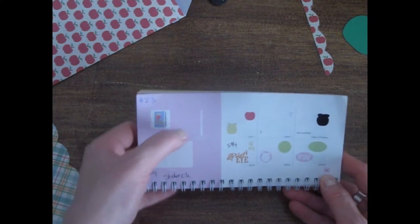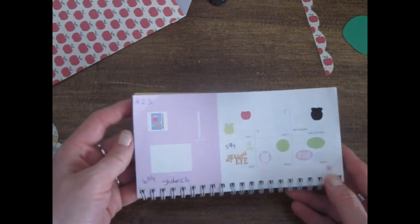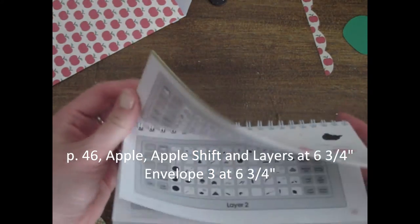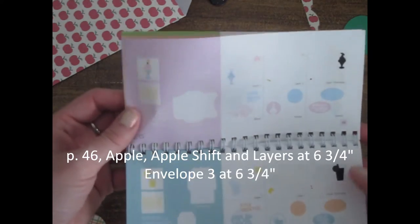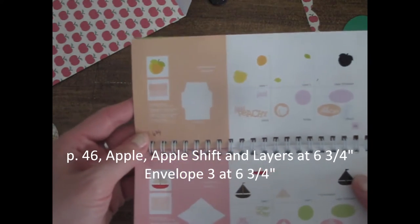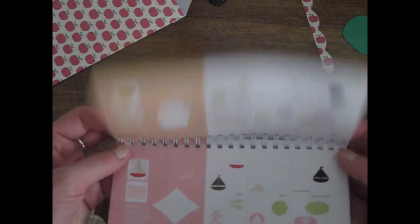I cut the card and the apple shift and all of the layers at six and three quarter inches using envelope number three, and that is also cut at six and three quarter inches, and it's found on page 66. So we're going to go ahead and get started.